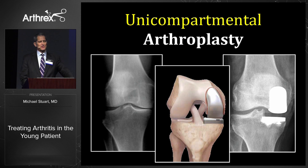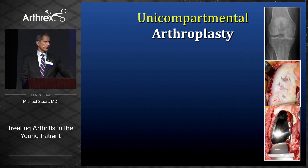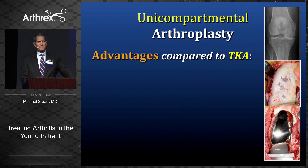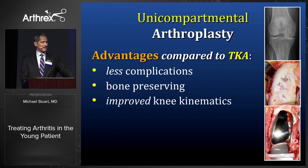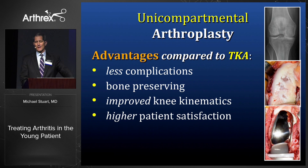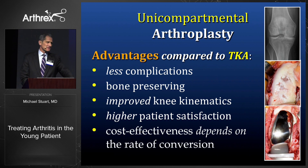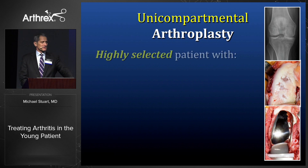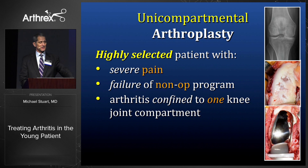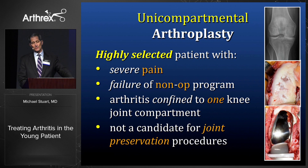My practice now incorporates many more unis than before. There are many advantages: less complications, very bone-preserving, kinematics of the knee are honestly improved, and patients like unis better than total knee arthroplasty. Cost-effectiveness depends upon the rate of conversion to total knee arthroplasty. For a highly selected patient with severe pain who has failed a non-operative program, has arthritis in one compartment, and is not interested in joint preservation procedures, I would do a uni.